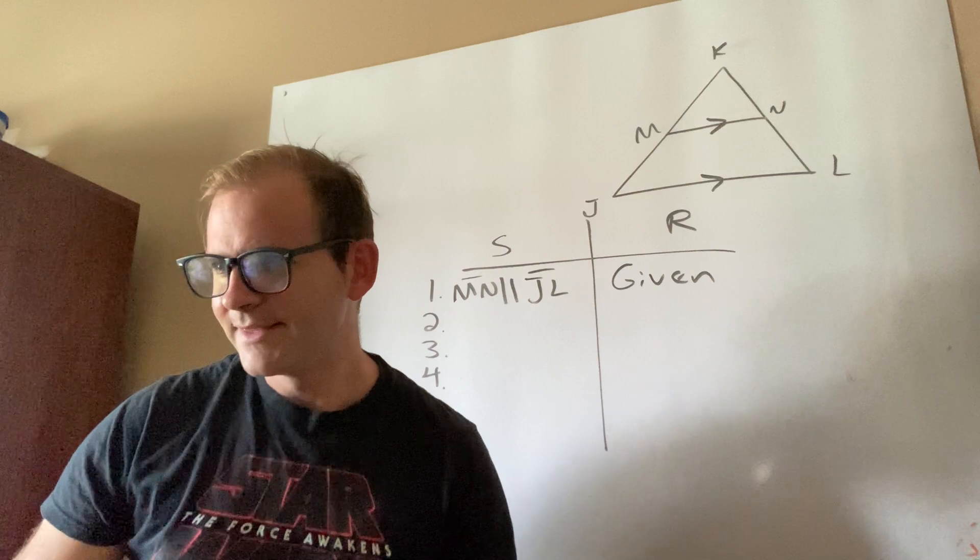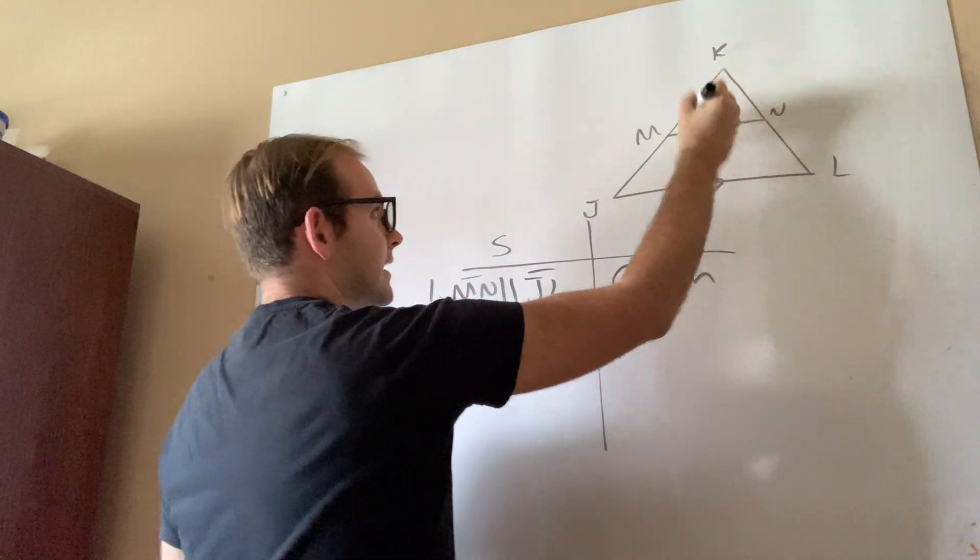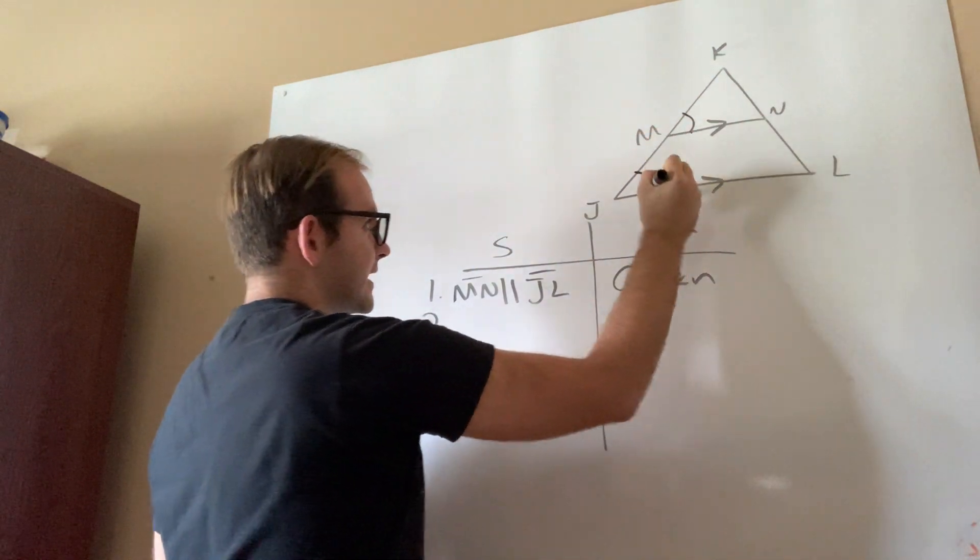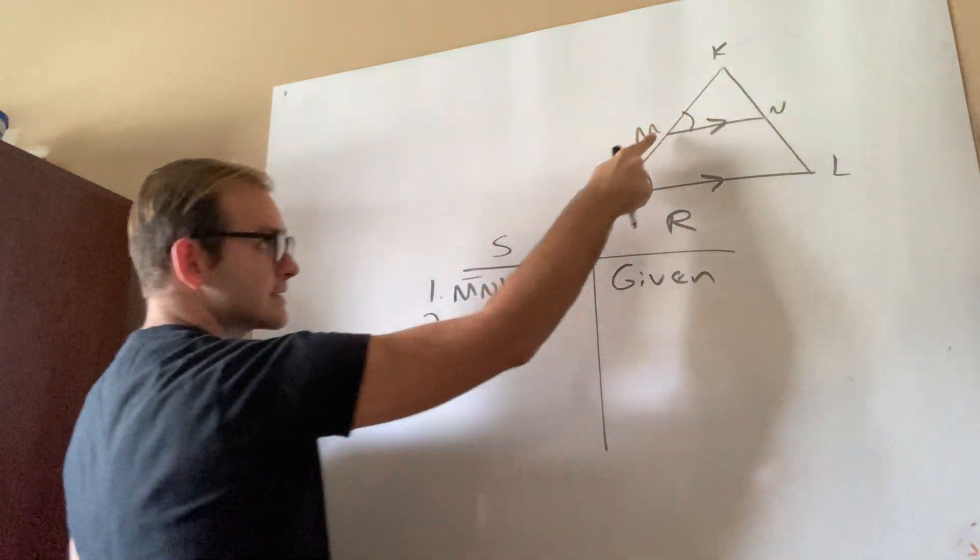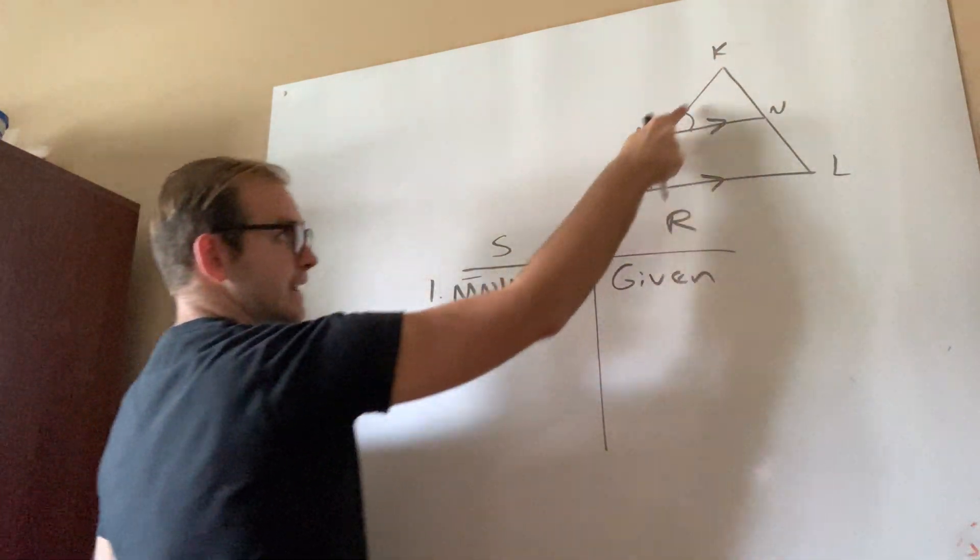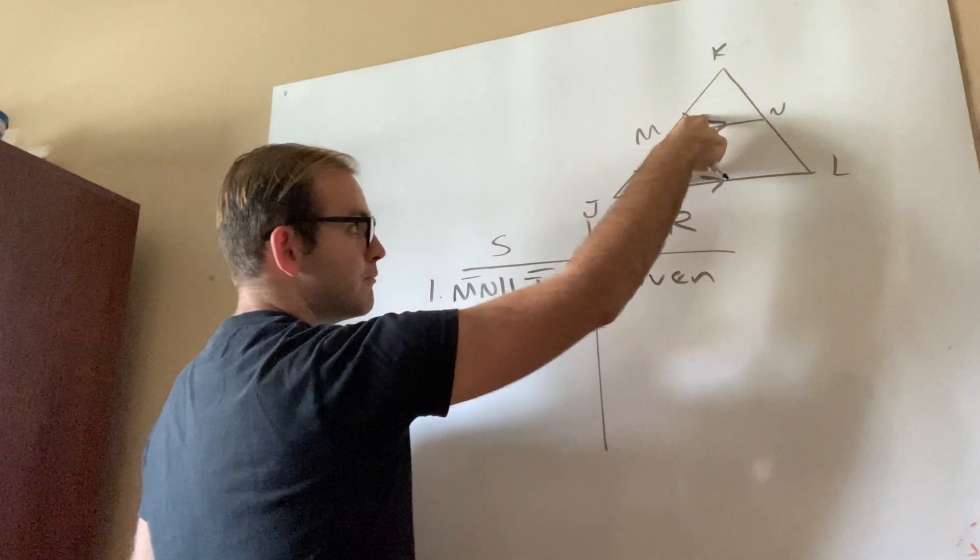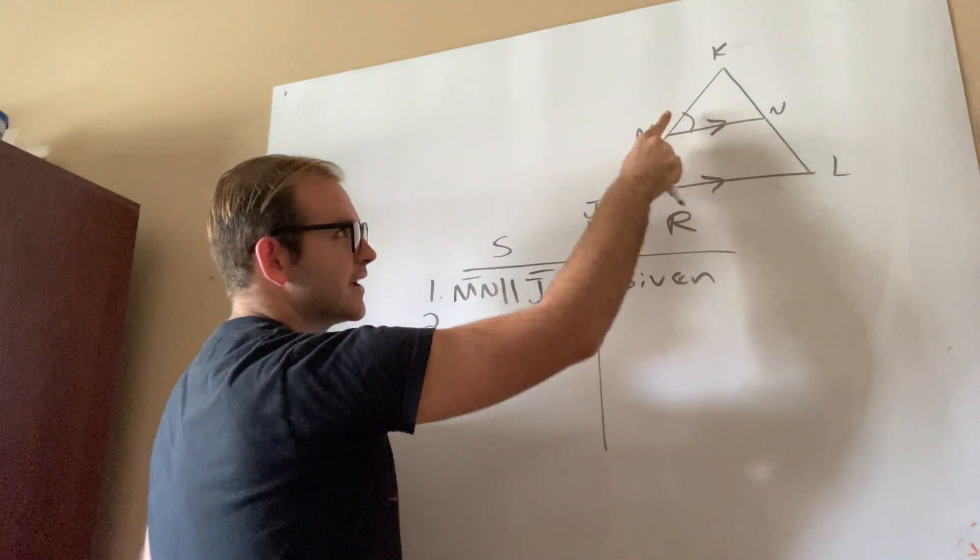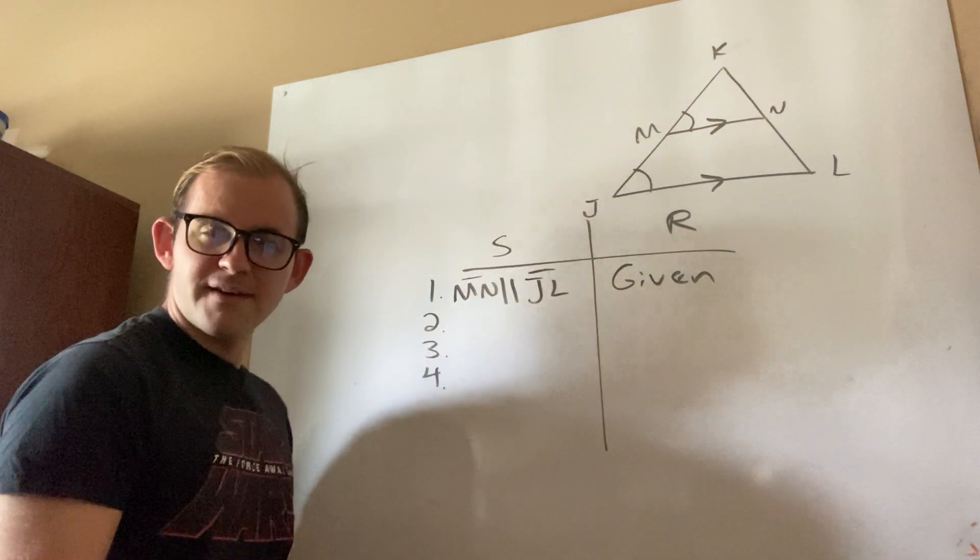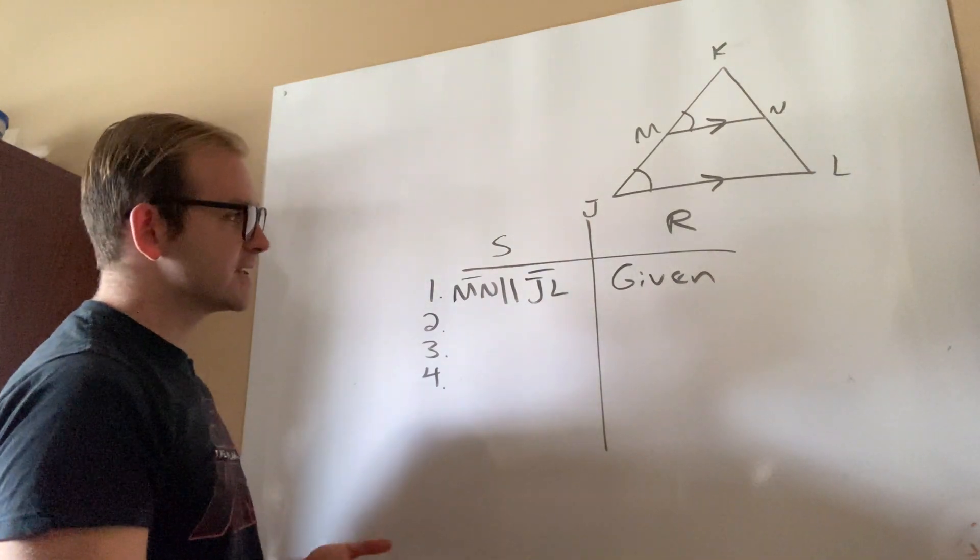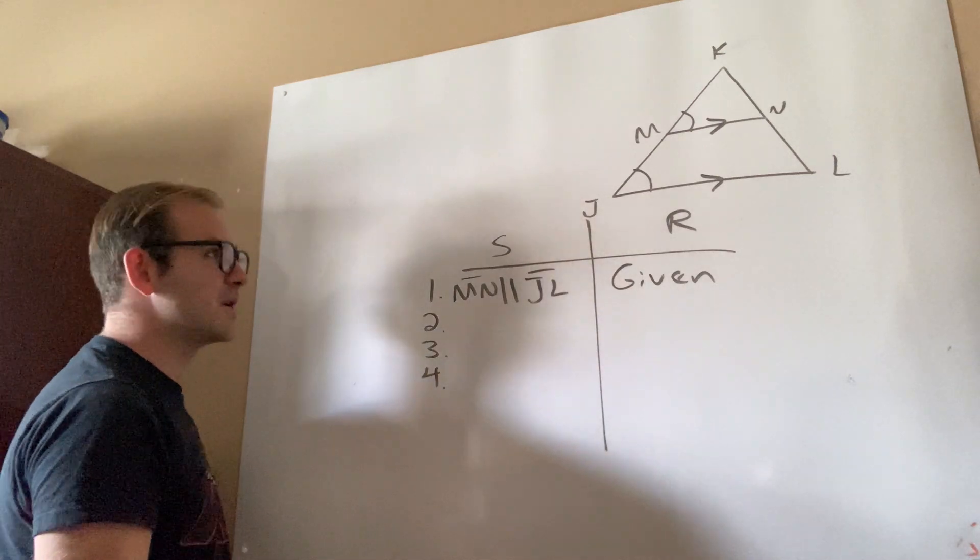So in this particular case, notice that this angle right here and this angle right here, do you guys notice how they are both on the right-hand side of this transversal? They're both on the right and they're both above. Like, this is above JL and this is above MN. I wonder, what type of angles are those that are in the same relative position? Oh, my goodness. Corresponding angles.